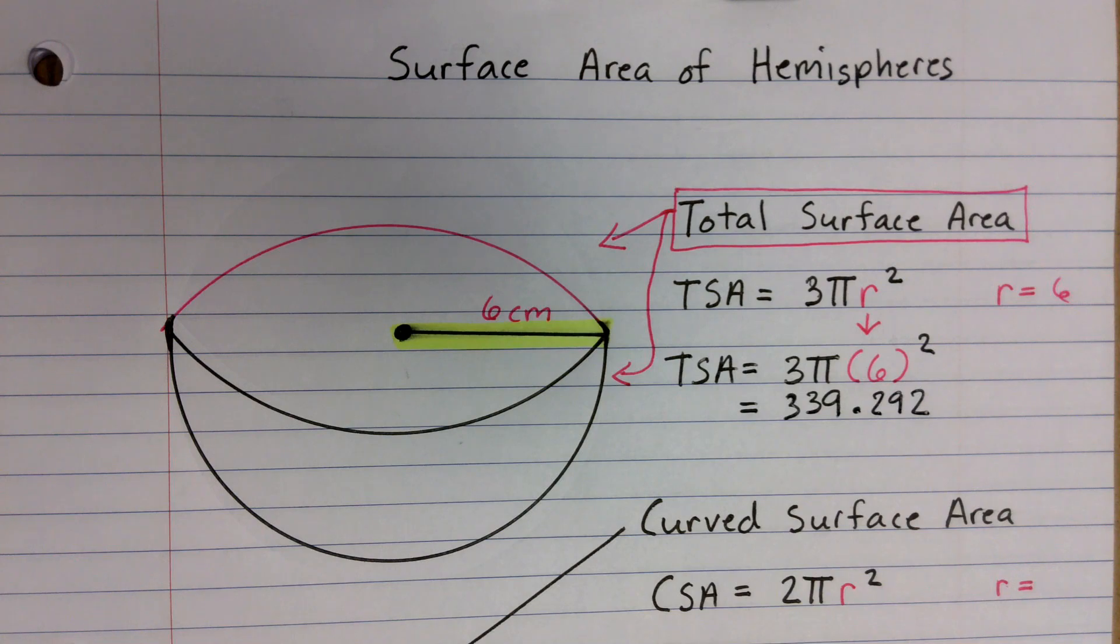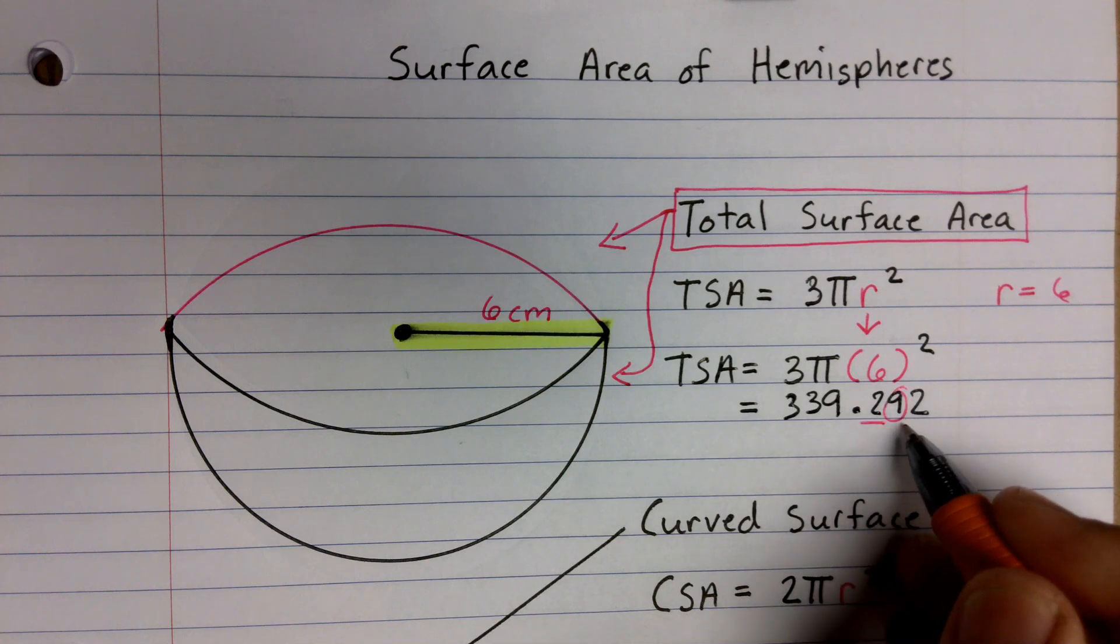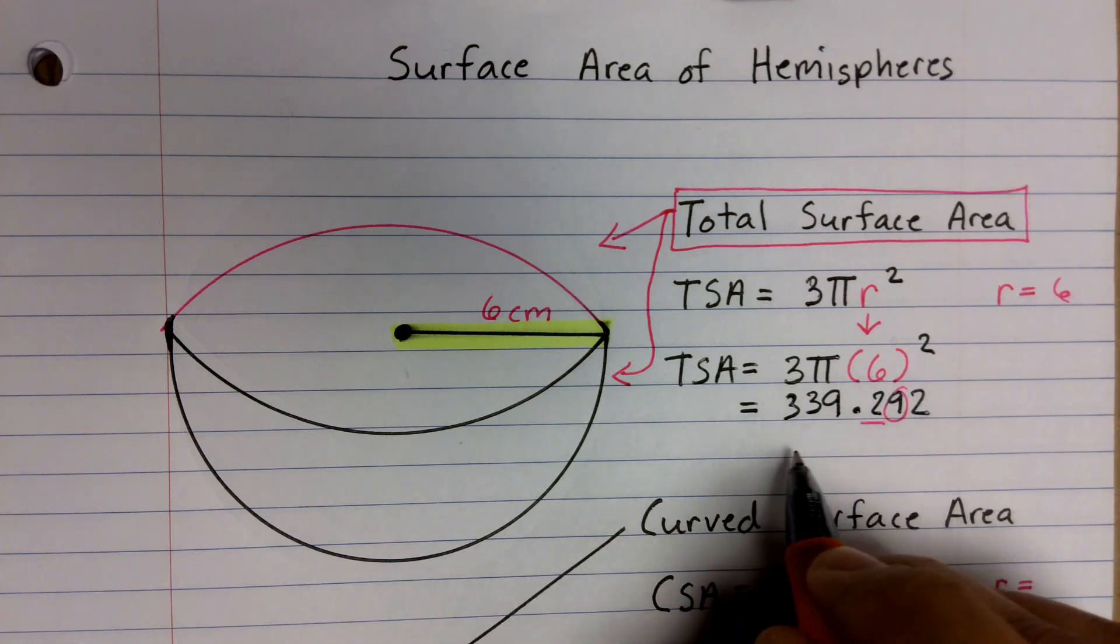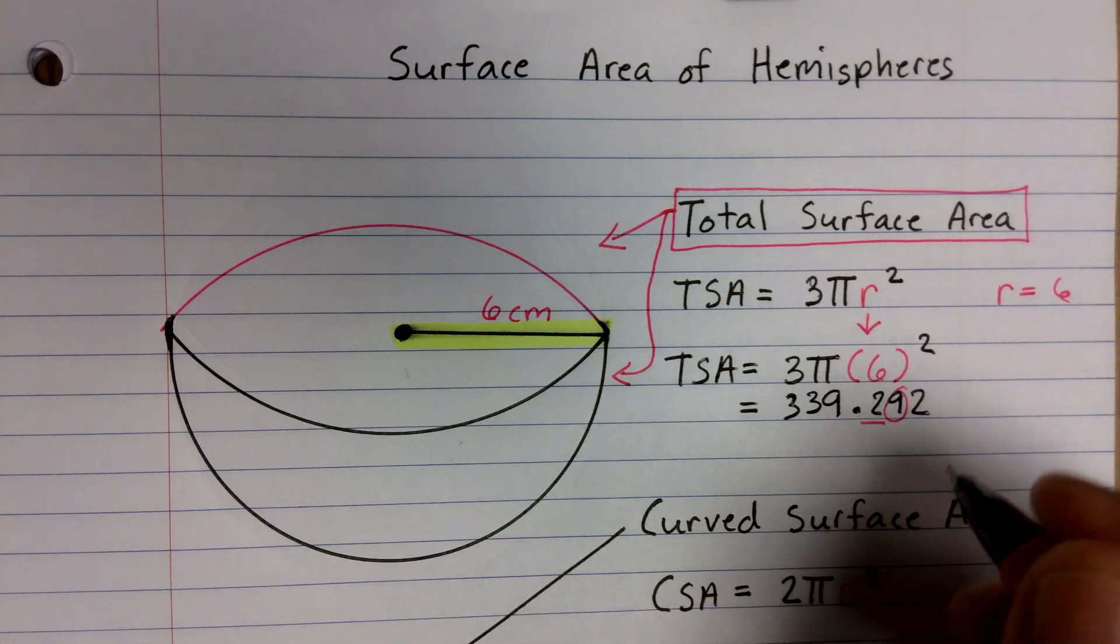And then if we were to round this, we wanted to round it, we would go ahead and look at our tenths place, and I would go to my hundredths. And in this case, notice that we have a 9. So that tells me, 5 or more raise the score to change this 2 to a 3.